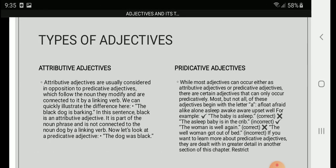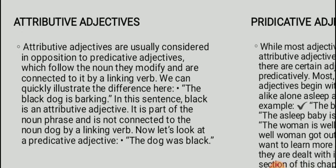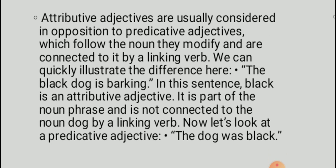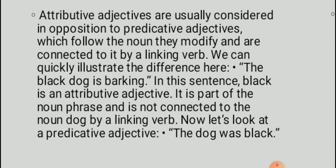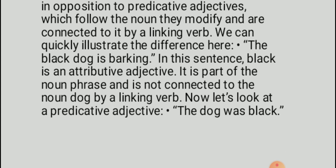The next slide focuses on the types of adjectives. The most important and most frequently used type is the attributive adjective. Attributive adjectives are considered in opposition to predicative adjectives, and both should be understood. Predicative adjectives are adjectives that follow the noun they modify and are connected to it by a linking verb. If there are predicative adjectives, there should also be a linking verb — the two go hand in hand.